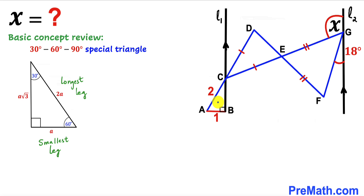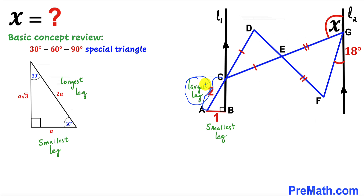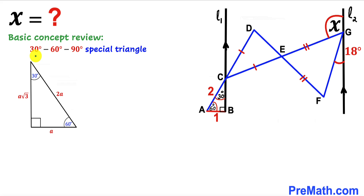Now let's focus on right triangle ABC. AB is the smallest leg and AC is the longest leg, and we can see the longest leg is twice the smallest leg. Therefore, according to the 30-60-90 special triangle, the angle at A is 30 degrees and the angle at B is 60 degrees.